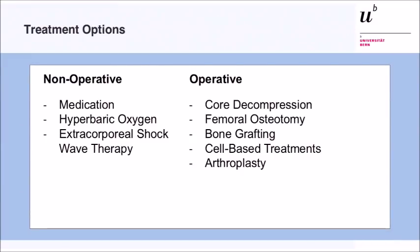Treatments are split into surgical and non-operative. Non-operative options include medications, bisphosphonates, statins, and anticoagulation. There are also reports about hyperbaric oxygen therapy and extracorporeal shockwave therapy, but the evidence for those is very limited and results are uncertain; the indication is only for very early stages. Operative treatments can be split into core decompression, femoral osteotomies, bone grafting, cell-based treatments, and arthroplasty.